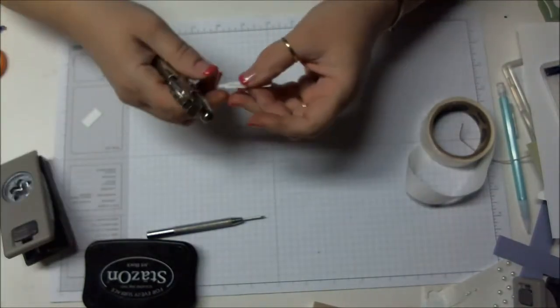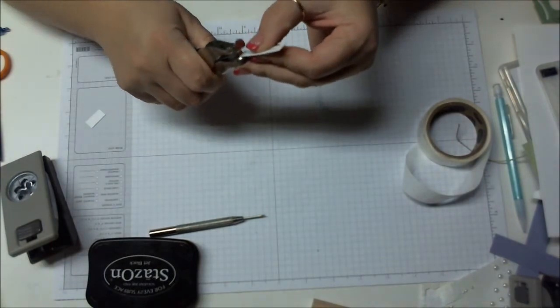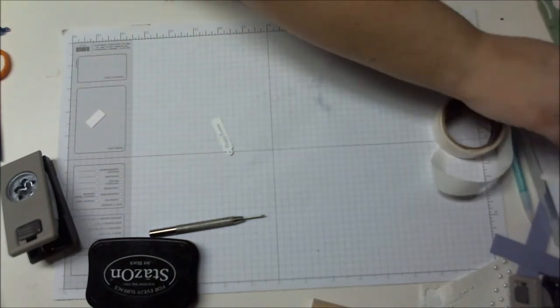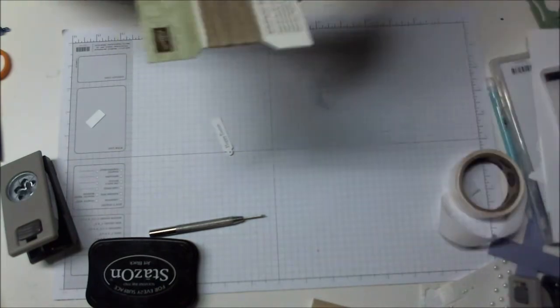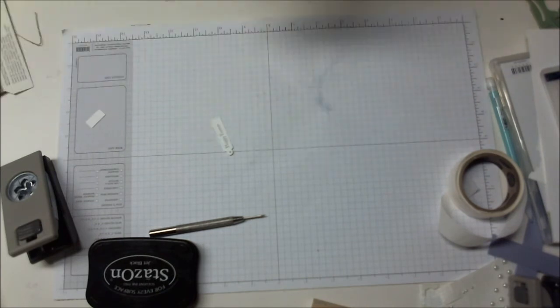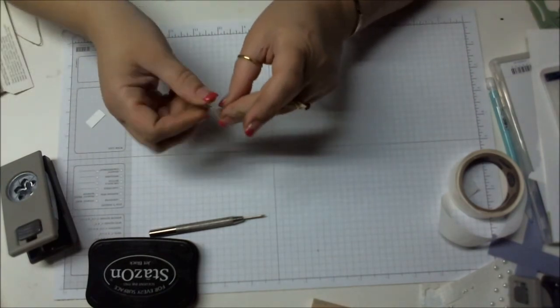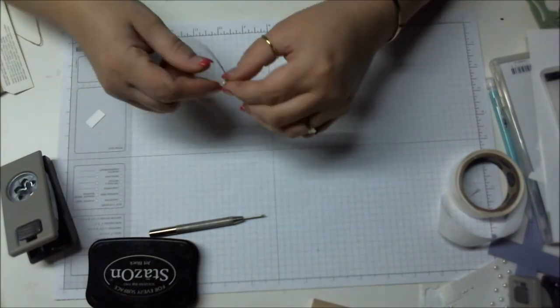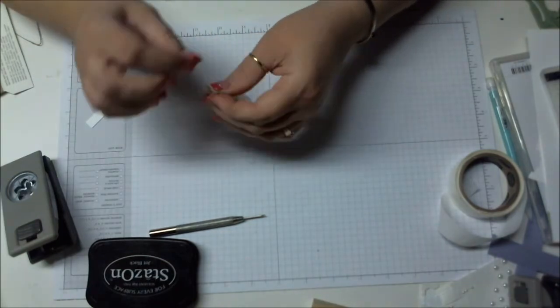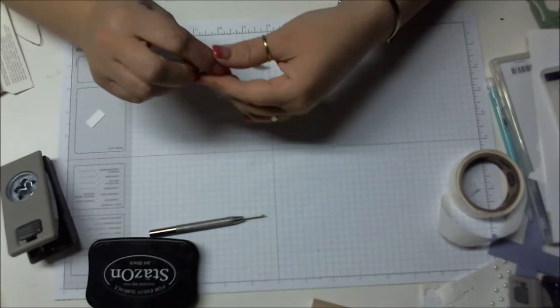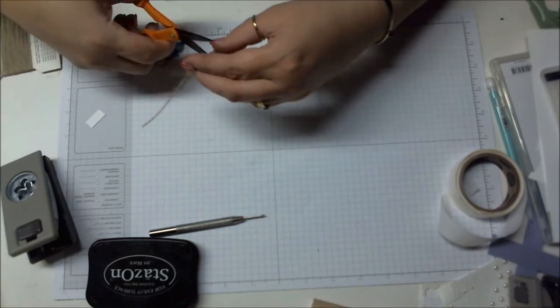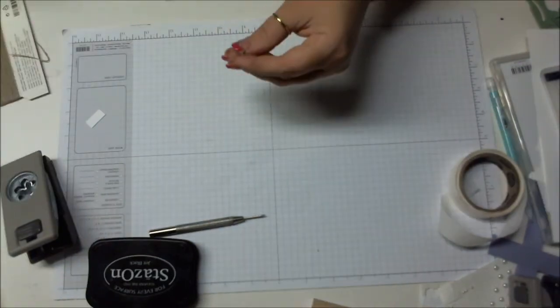Then I took a hole punch, a very tiny hole punch. You could use your piercer. I just used a tiny hole punch. Took some linen thread, cut off a piece here, and I ran it through the hole, tied a knot.